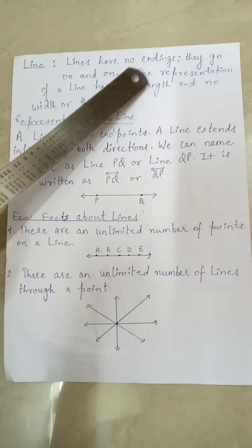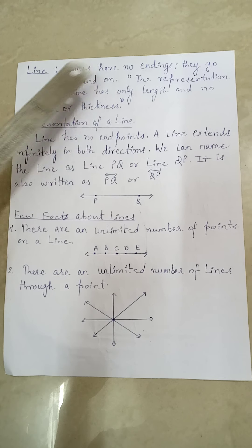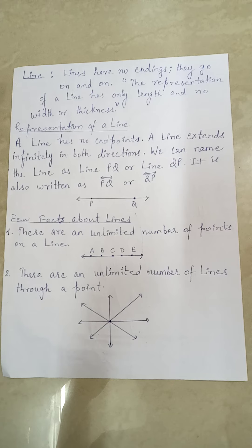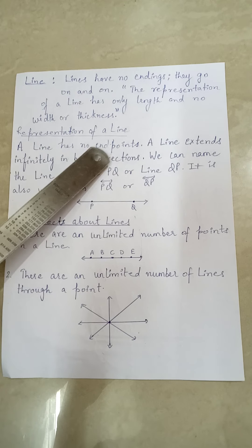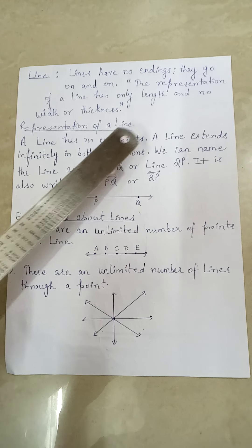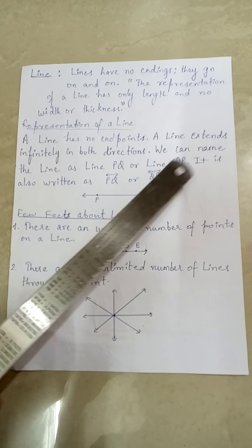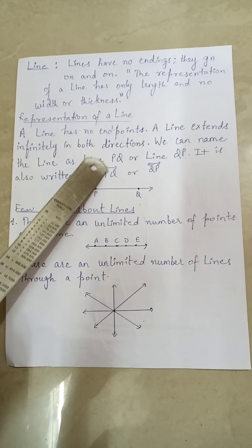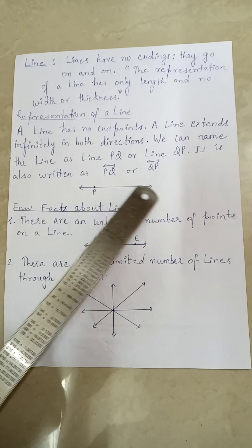The next heading is Lines. Lines have no endings — they go on and on. A line has only length and no width or thickness. A line has no endpoints and extends infinitely in both directions. We can name a line as Line PQ or Line QB, written with a line symbol above the letters.